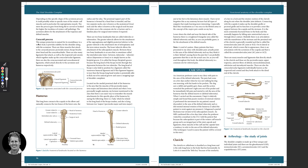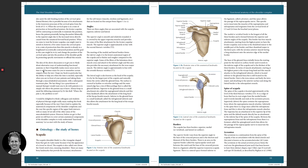We've got the coracoid process next — a beak-like projection just here. There are three muscle attachments to this bony projection: one is the coracobrachialis, the biceps short head will also attach, and the pectoralis minor will insert as well.